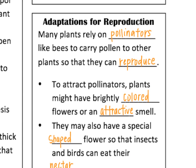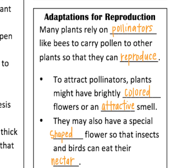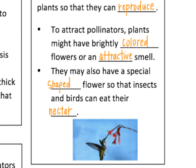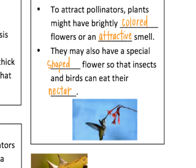Lastly, we have some adaptations for reproduction. A lot of plants require pollinators — things like bees, or even the wind — to carry pollen to other plants so they can reproduce. Plants have adaptations to attract these pollinators, such as brightly colored flowers so the bee can see and be attracted to the flower easily. They might also have an attractive smell, since many flowers smell really nice so the bee wants to come and can easily find the flower. They might also have a special shape, like the long, skinny flower shown with the hummingbird, shaped so the hummingbird's beak can fit in to get the nectar and carry pollen to other plants.